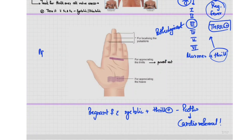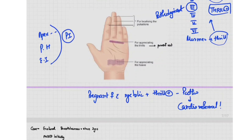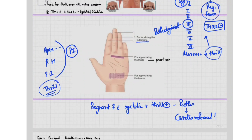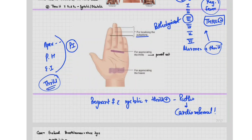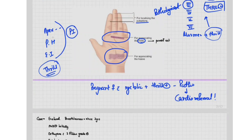To summarize, we have covered apex impulse, apex beat, parasternal heave, epigastric impulse — all precordial impulses — and thrill. One last important point: when looking for these impulses, we use different parts of the hand. For appreciating the heave, we use the heel of the hand. For appreciating thrills, we use the metacarpophalangeal joints. For localizing impulses like the apex impulse and epigastric impulse, we use the pulp of the fingers.